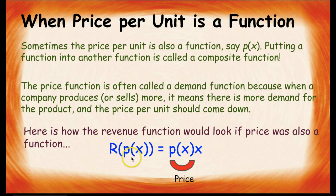Here is how the revenue function would look if price was also a function. Now, look at our function notation. We have revenue as a function of price, with our independent variable being x, the quantity. So we would need to plug in, instead of just P, we would have P of x times x. What kind of function does that look like to you? Hopefully, you are saying, looks like a quadratic.